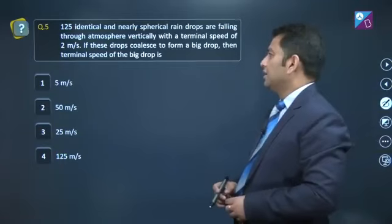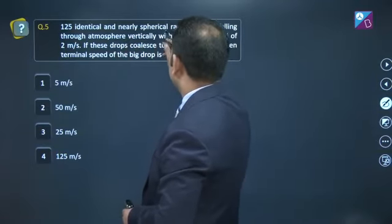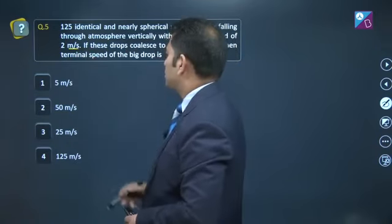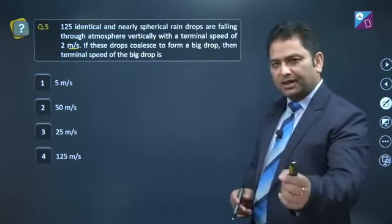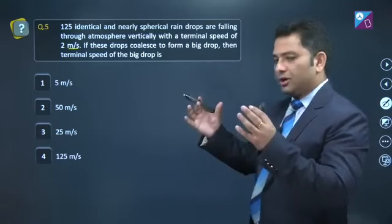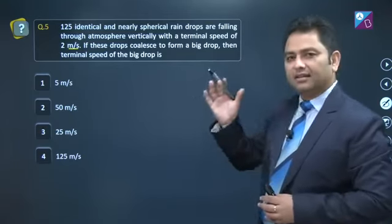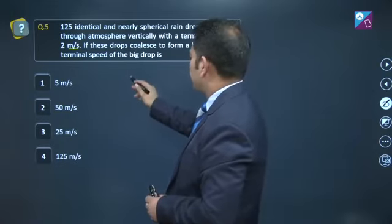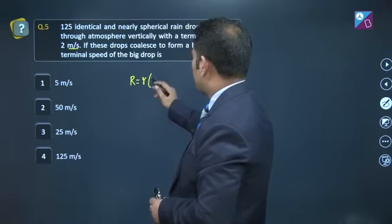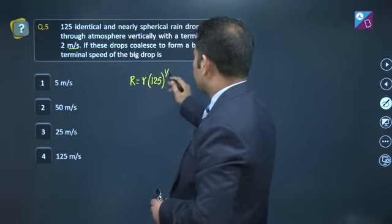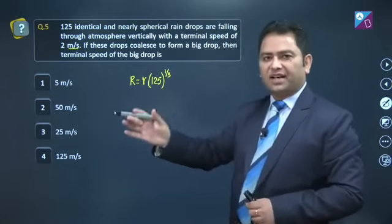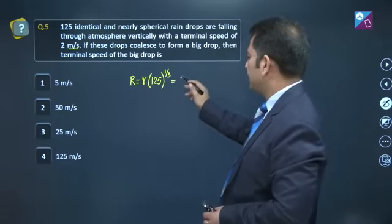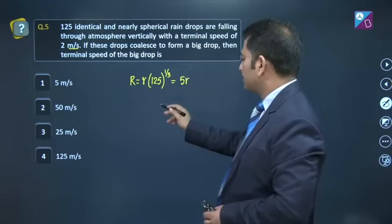Let's see question number 5. 125 identical and nearly spherical raindrops are falling through atmosphere with a terminal speed of 2 meter per second. Meaning each drop has terminal speed 2 meter per second. If these drops coalesce, you need to calculate the terminal speed of the bigger drop. First thing, capital R will be small r times 125 raise to the power 1 by 3. This is a common formula - when multiple spheres coalesce, the bigger sphere that forms has this radius. So you can see that the radius is 5r.